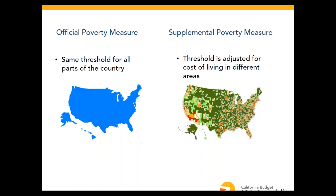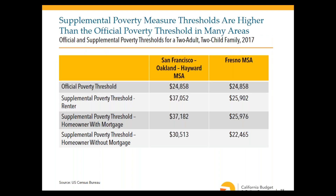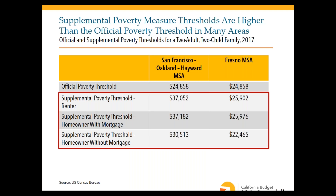Supplemental poverty thresholds are based on metropolitan statistical areas (MSAs), made up of a county or group of counties. Within each place, there are different thresholds depending on whether a family rents, owns with a mortgage, or owns without a mortgage. For a family of two adults and two children, the supplemental thresholds in the San Francisco-Oakland-Hayward MSA and Fresno MSA differ, and importantly, supplemental thresholds are not always higher than the official threshold — in some cases, they're lower.